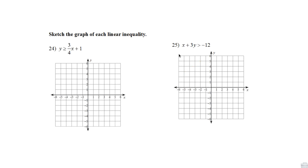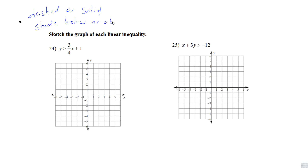Next we want to graph some inequalities. When graphing inequalities, we need to make two decisions: do we use a dashed line or a solid line, and do we shade below or above? It's dashed if we use less than or greater than; solid if we use less than or equal to or greater than or equal to. We shade below for less than or less than or equal to, and above for greater than or greater than or equal to — but only when in slope-intercept form.